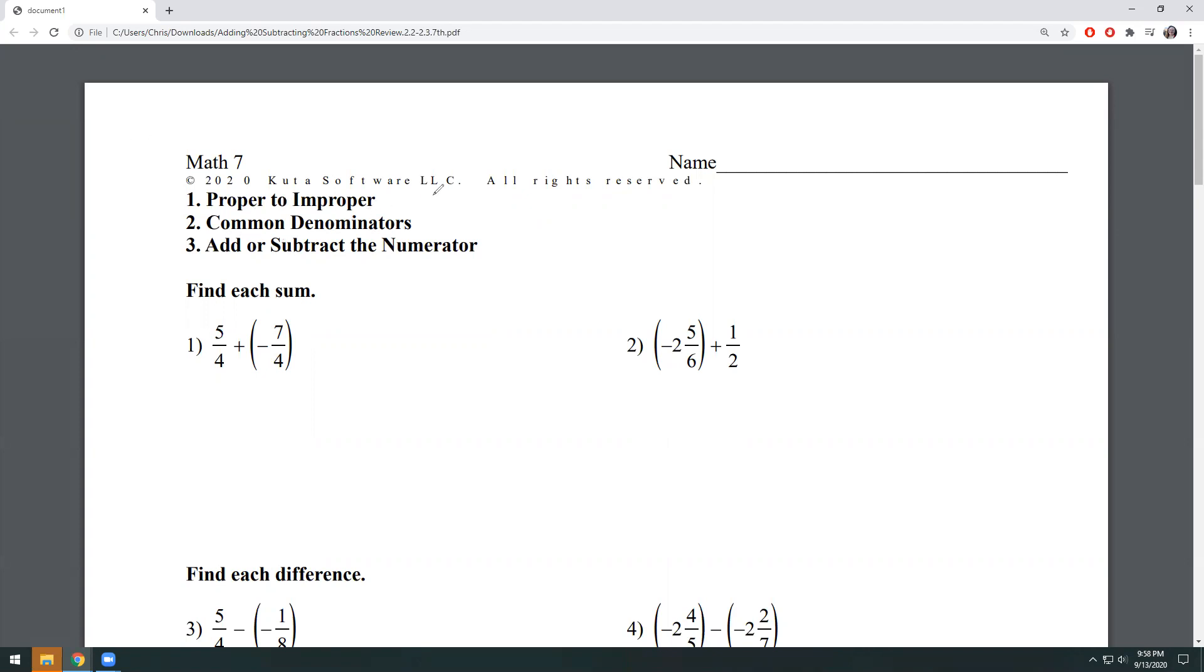Second step is getting common denominators. So let's look at the bottom. Denominator means the bottom. We've got a four and a four. Those are common numbers. They're the same exact number, so I know that I don't even have to do step two.